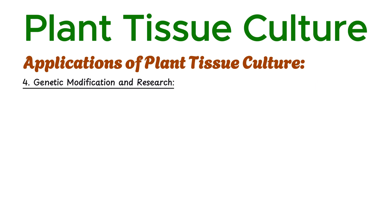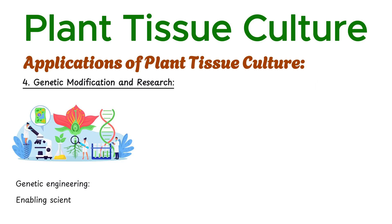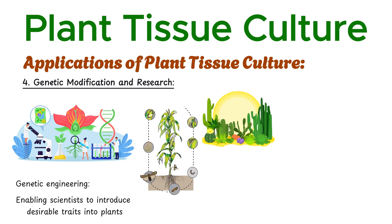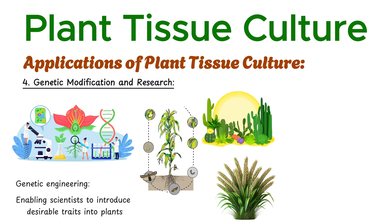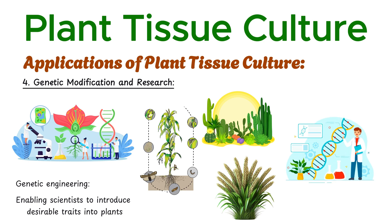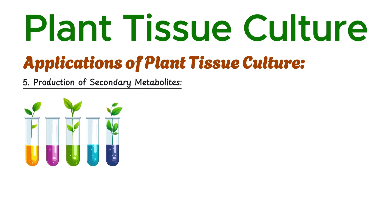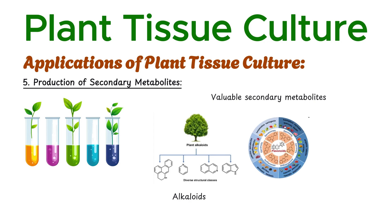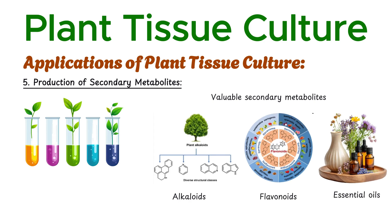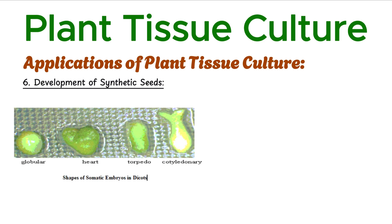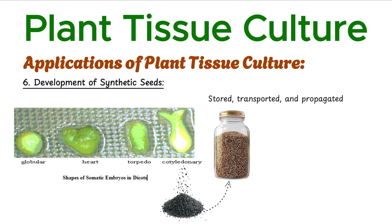Tissue culture provides a platform for genetic engineering, enabling scientists to introduce desirable traits into plants such as pest resistance, drought tolerance, or enhanced nutritional value. Through plant cell cultures, valuable secondary metabolites like alkaloids, flavonoids, and essential oils are produced, with significant pharmaceutical and industrial applications. Somatic embryos generated through tissue culture can be encapsulated to create synthetic seeds, which are easily stored, transported, and propagated, offering a sustainable solution for agriculture.